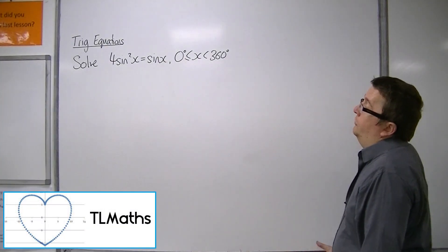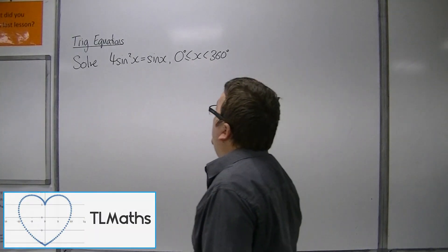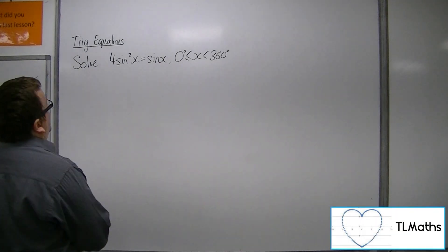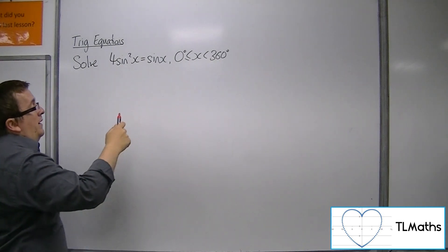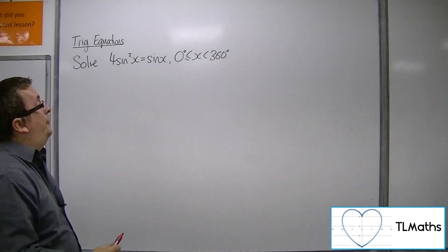OK, so let's say we want to solve 4sin²x = sinx between 0 and 360 degrees. So what we must do is not divide through by sinx, otherwise we will lose solutions.